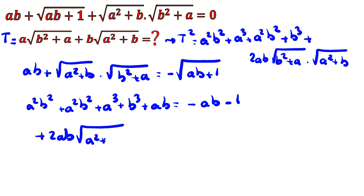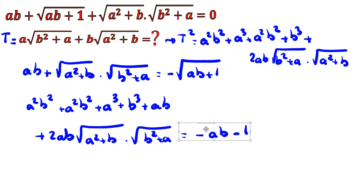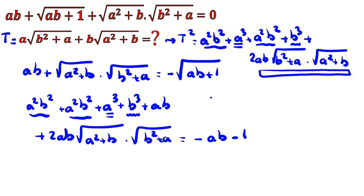Now let's see the relationship. We have a²b², a³, b³, and ab here. The right-hand side also contains a²b², a³, b³, and 2ab. If I match these terms and consider this expression in terms of t...